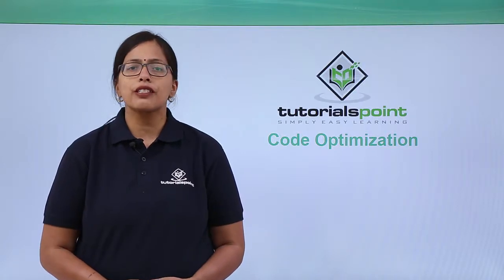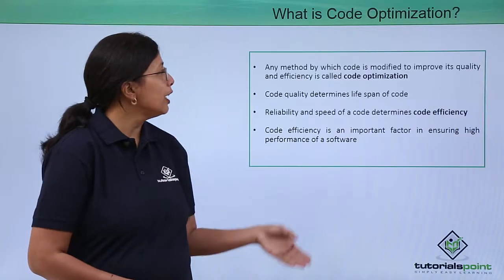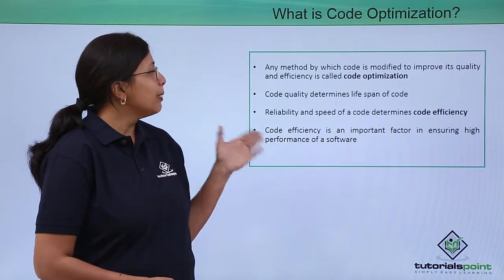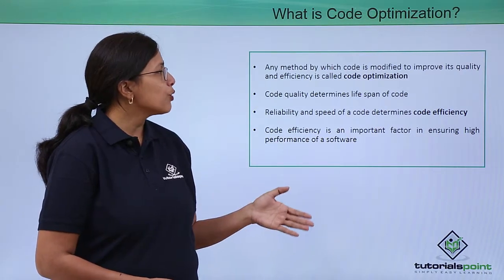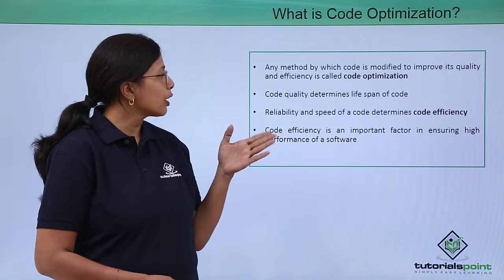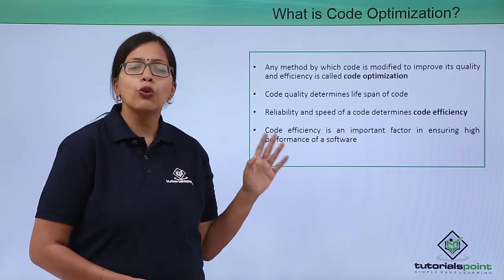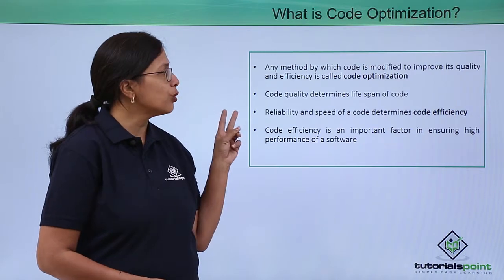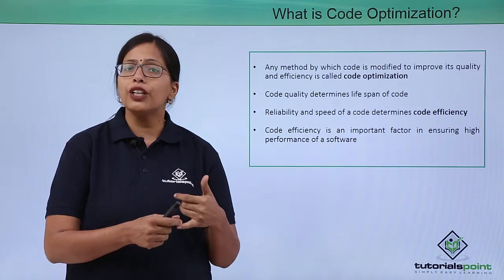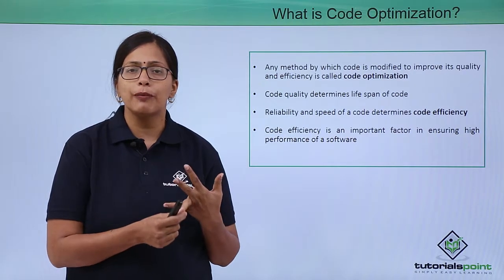In this video we are going to discuss about code optimization. Any method by which code is modified to improve its quality and efficiency is called code optimization. There are two terms: quality and efficiency. The quality of the program increases and the efficiency of the program increases.